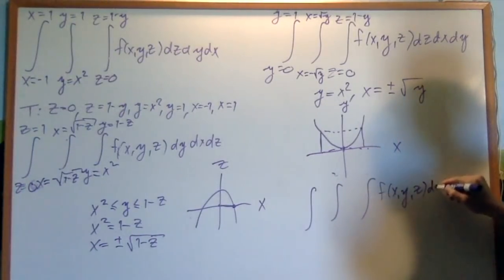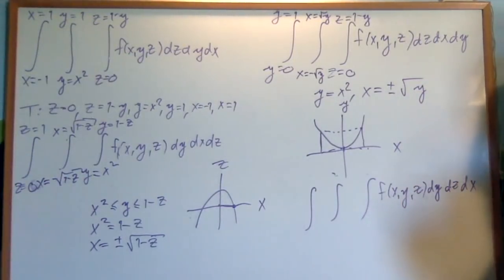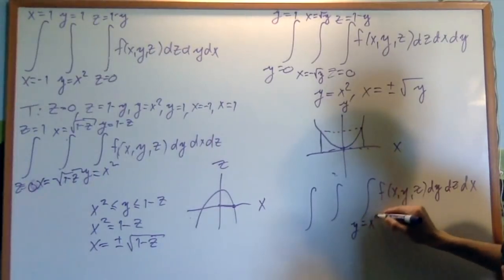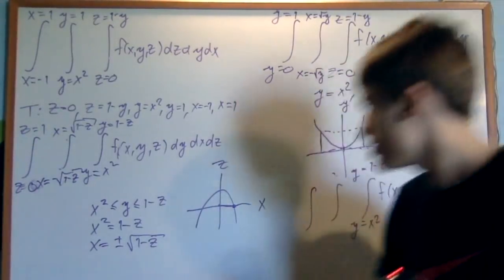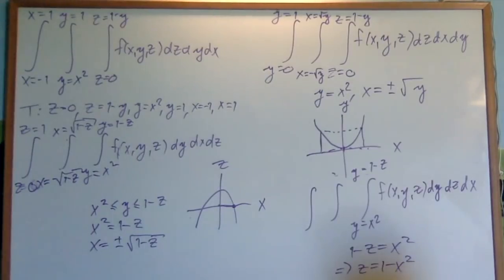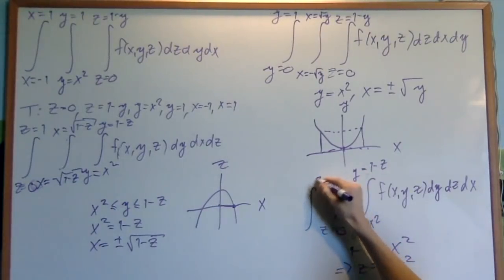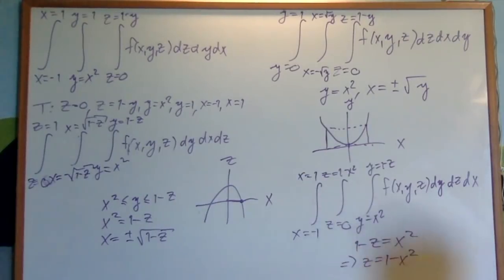Next let's do the order dy dz dx. Y is still going between x squared and one minus z from before. For z, I set one minus z equal to x squared, giving z equals one minus x squared. So z goes from zero until one minus x squared. Then x simply goes between minus one and one.